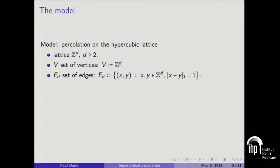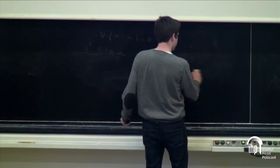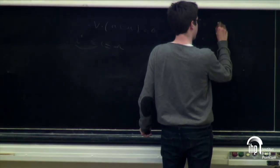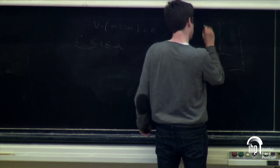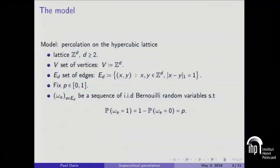Here is the model. We are taking ZD — points of the lattice — and the edges of ZD. We fix some probability P between 0 and 1, and with probability P we remove edges in an IID fashion. Formally, we take a sequence of IID binary random variables indexed by the edges of the lattice, and we choose it so that the probability of omega-e equal to 1 is equal to P.